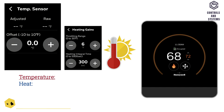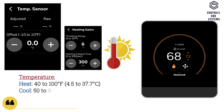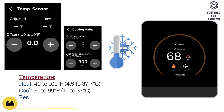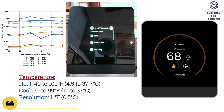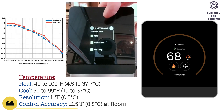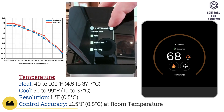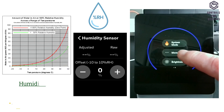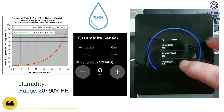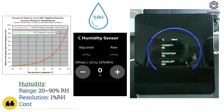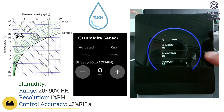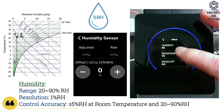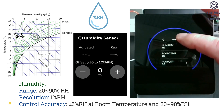Onboard Sensor Measuring Range. Temperature: heat range is 4.5 to 37.7 degrees Celsius, cool range is 10 to 37 degrees Celsius, resolution is 0.5 degrees Celsius, control accuracy is plus or minus 0.8 degrees Celsius at room temperature. Humidity range is 20 to 90% RH, resolution is 1% RH, control accuracy is plus or minus 5% RH at room temperature.